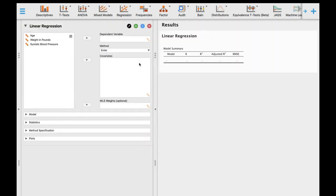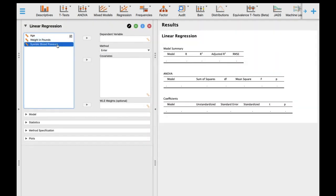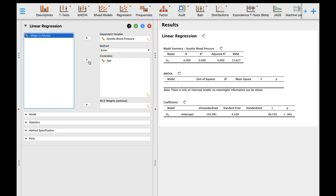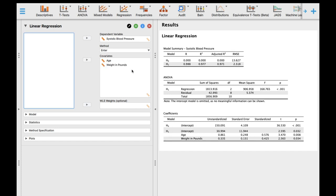So in this case, I will click linear regression, and then the systolic blood pressure would go into the dependent variable box. Your age and the weight in pounds will go into the covariates.